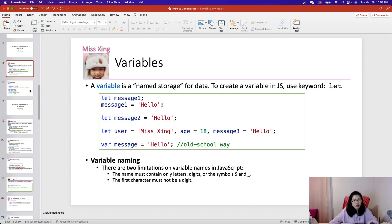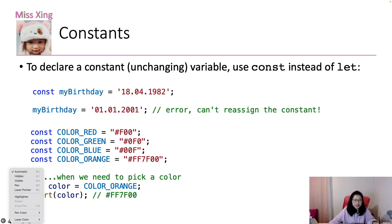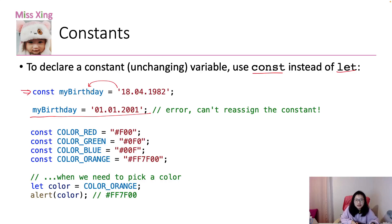I also want to cover 'const' as part of the variable topic. There's another way to define a kind of variable — a special variable called a constant. A constant means you cannot change the value after you define it. So you can use 'const' instead of 'let' to define variables. For example, 'const myBirthday = ...' and after you assign a value to 'myBirthday', you are not allowed to reassign another value to it. Constant means an unchanging variable — if you want to change it, use 'let' instead of 'const'.